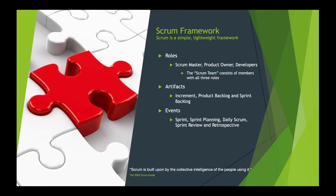The Scrum framework defines a set of roles, artifacts, and events. The roles consist of the Scrum Master, the Product Owner, and the developers, which make up what is called the Scrum team. There are three artifacts defined by the Scrum framework: the increment, the product backlog, and the sprint backlog.